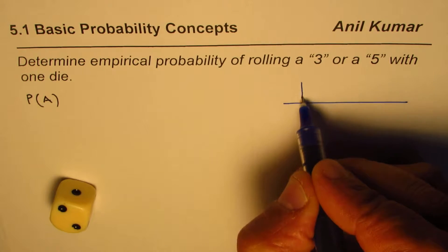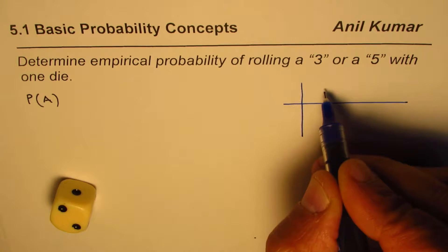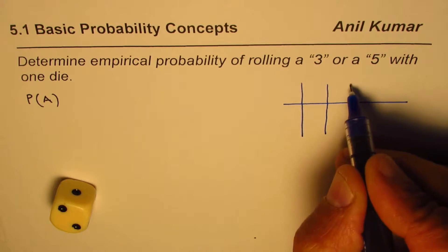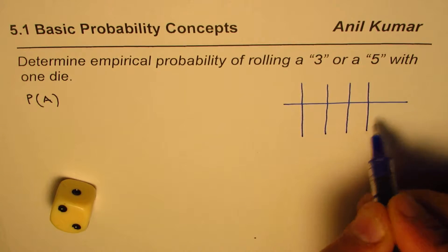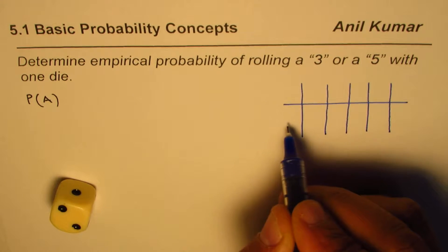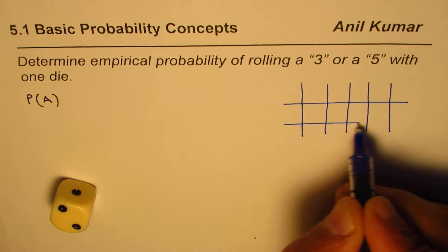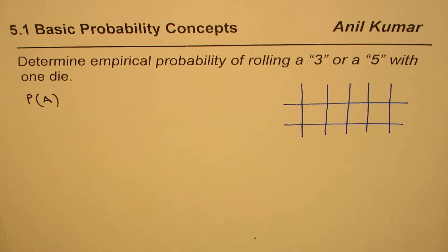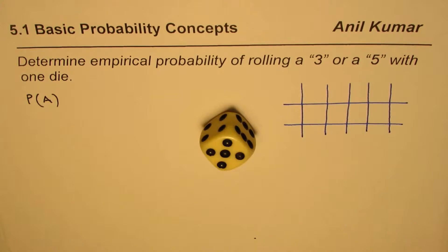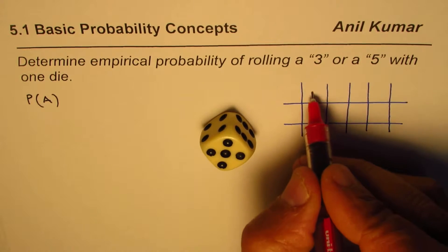What I will do is roll the die and see whether we get 3 or 5 or not. We can write down the number we get and then calculate the empirical probability at the end. So let's begin — rolling a few times. First roll: we get 5. Second roll: we get 5 again.